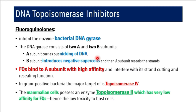In gram-positive bacteria, the major target of fluoroquinolones is topoisomerase-4. Mammalian cells possess topoisomerase-2, which has very low affinity for fluoroquinolones — hence there is low toxicity to host cells. Fluoroquinolones are specific for topoisomerase-4 in gram-positive bacteria, and since our mammalian enzyme topoisomerase-2 has very low affinity for them, the least toxicity is seen in mammals.